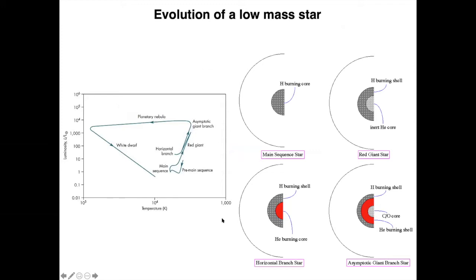So we summarize here the evolution of a low mass star. You have a star in the main sequence. It is in here in the main sequence. It has a hydrogen burning core and envelope of quiescent hydrogen.